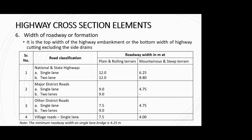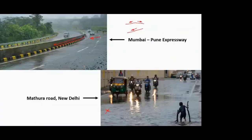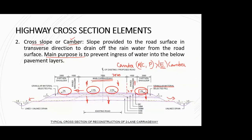Width of road formation (roadway width) is the top width of the highway embankment, or the bottom width in case of a cutting, excluding side drains. Typical values exist for different terrain types and road types. In the cross-section, the formation width excludes the drains — it is only the embankment base. Roadway width is the top width and formation width is the bottom width of the embankment.